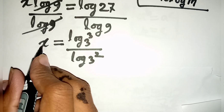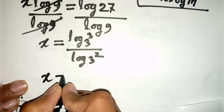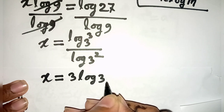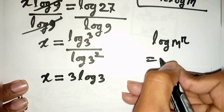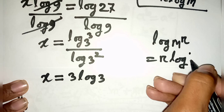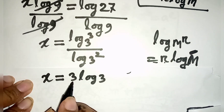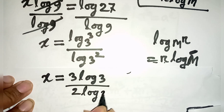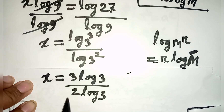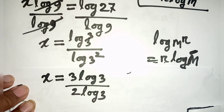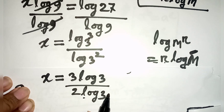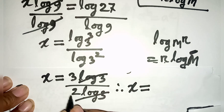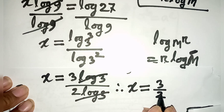Now we can write x is equal to log 3 power 3, which is the same as 3 log 3, according to the formula log m power r is equal to r log m. So log 3 power 3 is 3 log 3, divided by log 3 power 2, which is 2 log 3. This log 3 and log 3 will be cancelled, so x is equal to 3 divided by 2. This is the value of x.